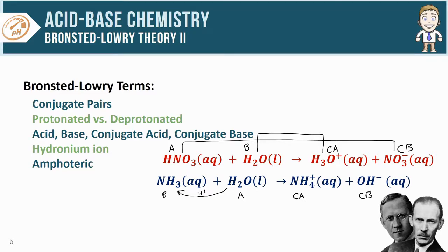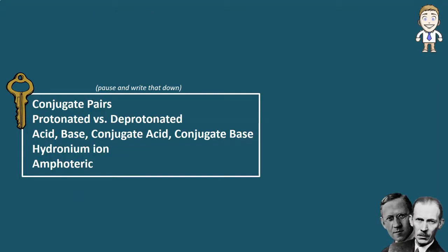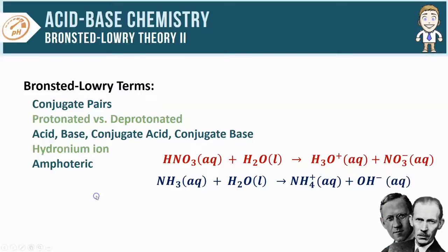And lastly, we've got amphoteric - sometimes you might also see this as amphiprotic depending on the source. Either version means a particle that can function as an acid or a base depending on the situation. Here we've got one example of that already: H2O, which with HNO3 functions as a base but with NH3 can function as an acid. There's other examples of amphoteric particles too. Those terms make up some of the key ideas for this video - make sure to pause and take some time, write those down.